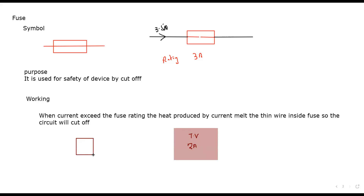You have a socket, and in this socket there are two things: one is the live wire, denoted by L, in which the charges are vibrating and moving; and the other is the neutral wire, in which the charges are not vibrating — not having energy. When you plug in your television these connect.